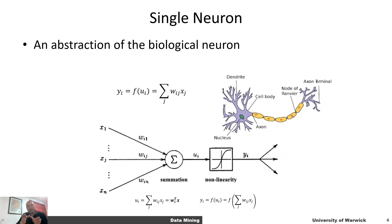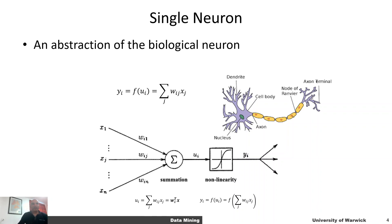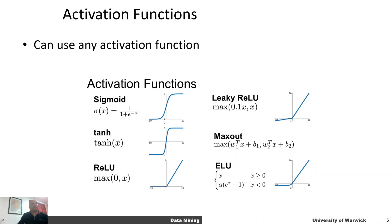Once we have a net input, we can apply a non-linearity on top of that, or we can apply any function — which is called an activation function — on this input to generate the output of that particular neuron. There are different types of activation functions; for example, you may choose to apply a linear activation function.